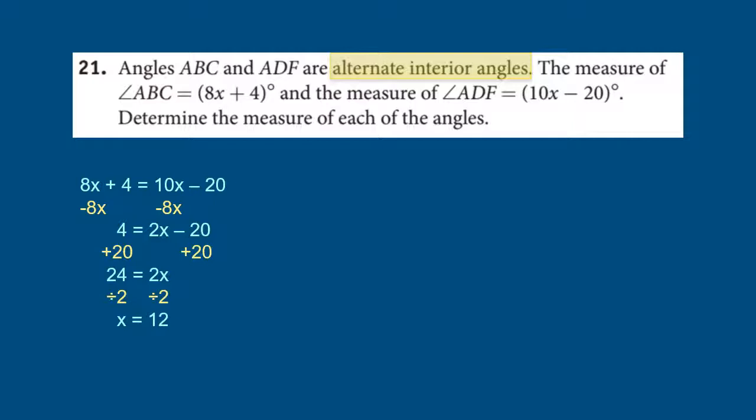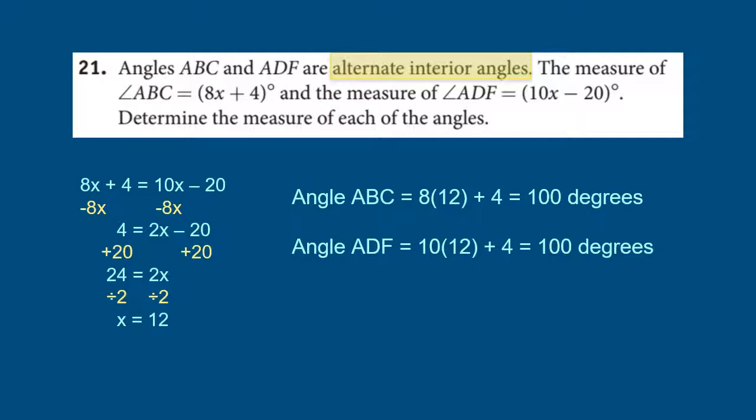So, now, I'm still not done. It says, determine the measure of each of the angles. So, I need to find the angle measure of ABC. So, 8X, which X is 12, plus 4. I put that in my calculator and I get that it equals 100 degrees. Again, I put in for angle ADF, I put in 12 for X. 10 times 12 plus 4 equals 100 degrees. And I said they were congruent and it works out that they really are congruent when I put them into the formula. So, that's automatically my check.